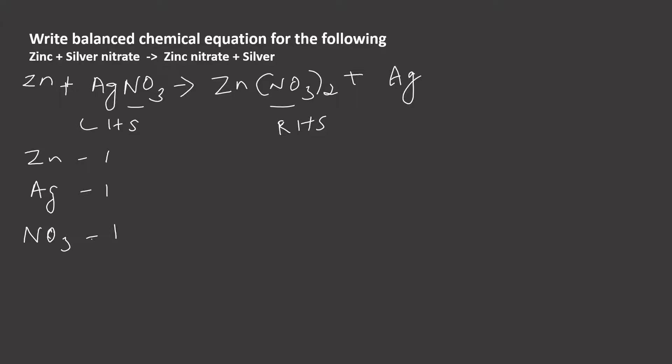The same order let us follow in the right-hand side. For zinc only 1, then for silver only 1. For nitrate you can see there are 2 nitrate groups attached to zinc, so let us write 2.